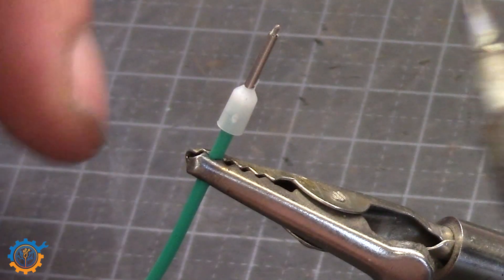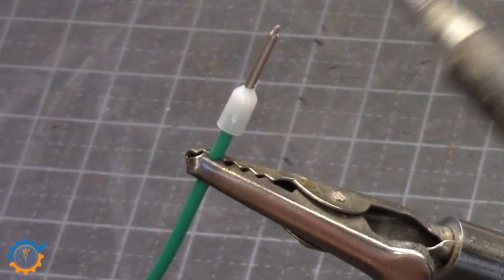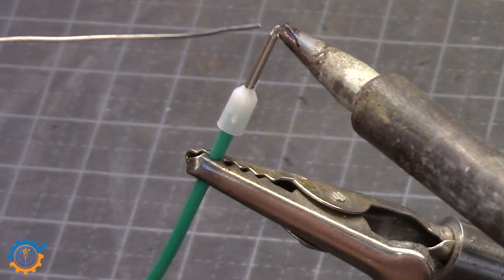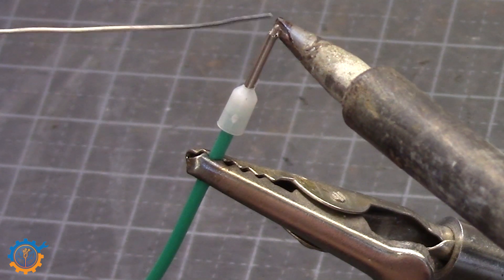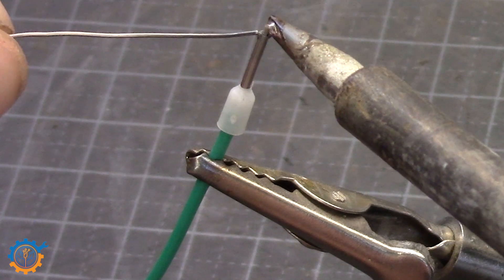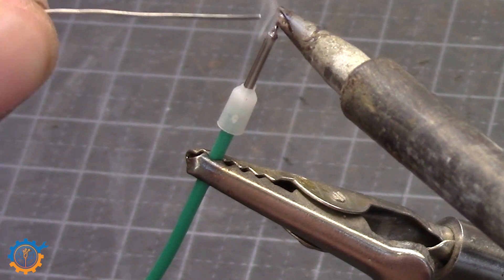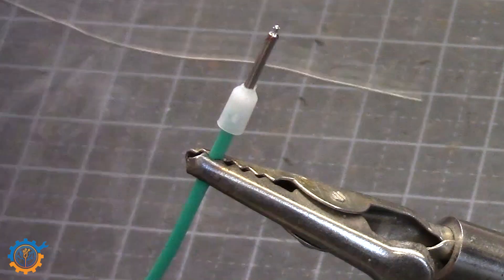Then you take your soldering iron. And just add some solder to the end. And that will creep into the actual tube itself. Don't add too much because you don't want it to be on the outside.